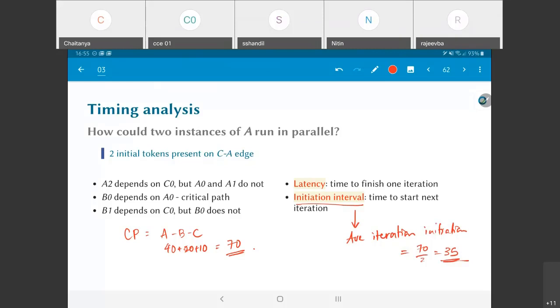What I showed you there was the initiation interval in order to start two iterations. What you could effectively say is that the average iteration interval in that case comes out to be 35, because on average I would be able to generate one completed iteration every 35 time units. The latency on the other hand is 70, because this is the time required to finish one iteration and would be related to the critical path. Even if I had more hardware, because the critical path is such, I would end up taking this much time to finish it.